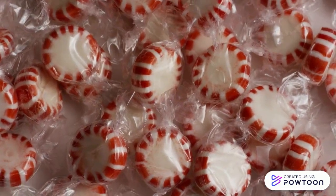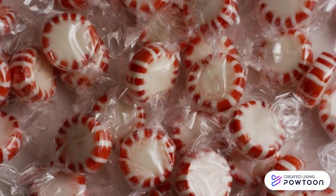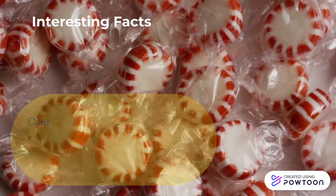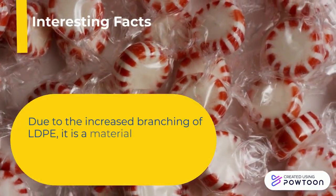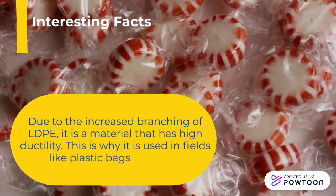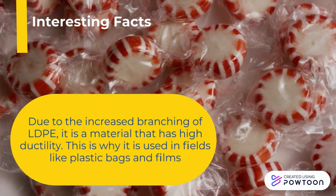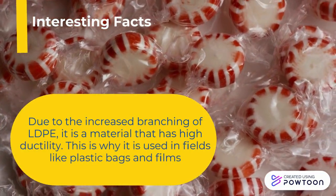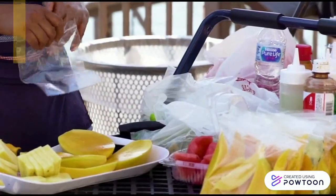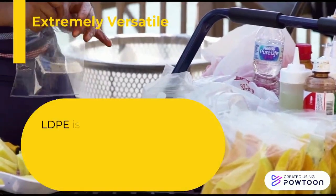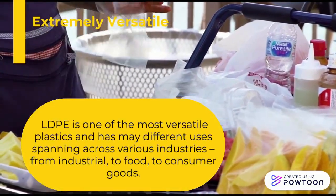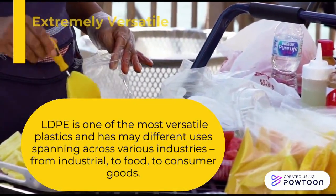Here are some interesting facts about low-density polyethylenes. Due to its increased branching, LDPE has a lower tensile strength than most polymers. However, it has greater ductility, which means that it can be stretched without breaking. For this reason, LDPE is widely used in products such as plastic bags and films. They are also one of the most versatile plastics and have many uses spanning across various industries, from industrial to food to consumer goods.